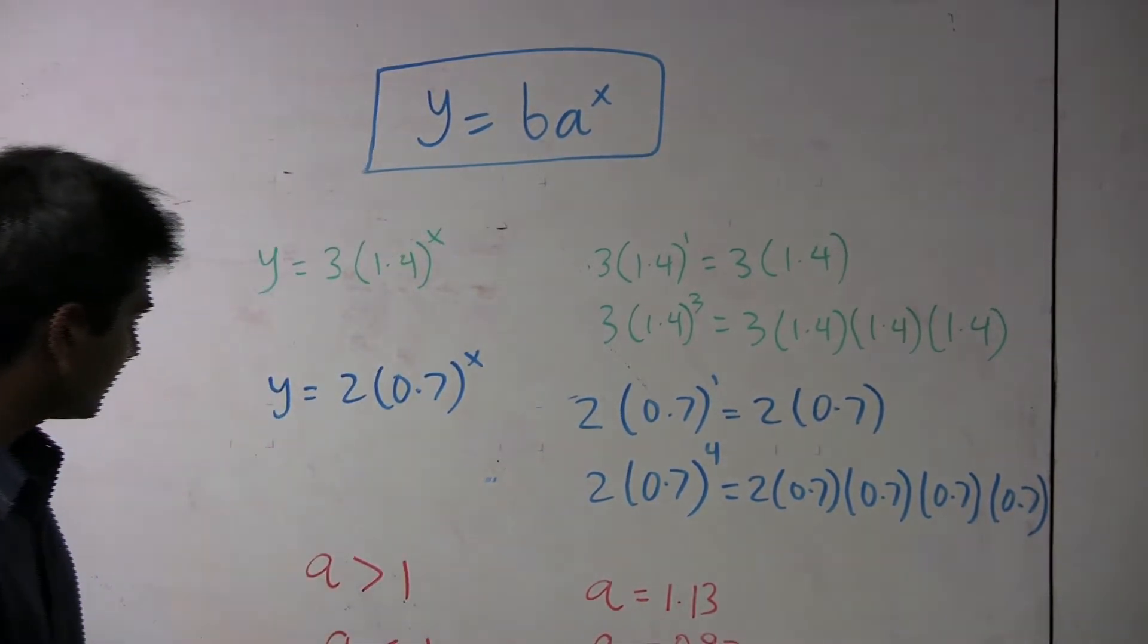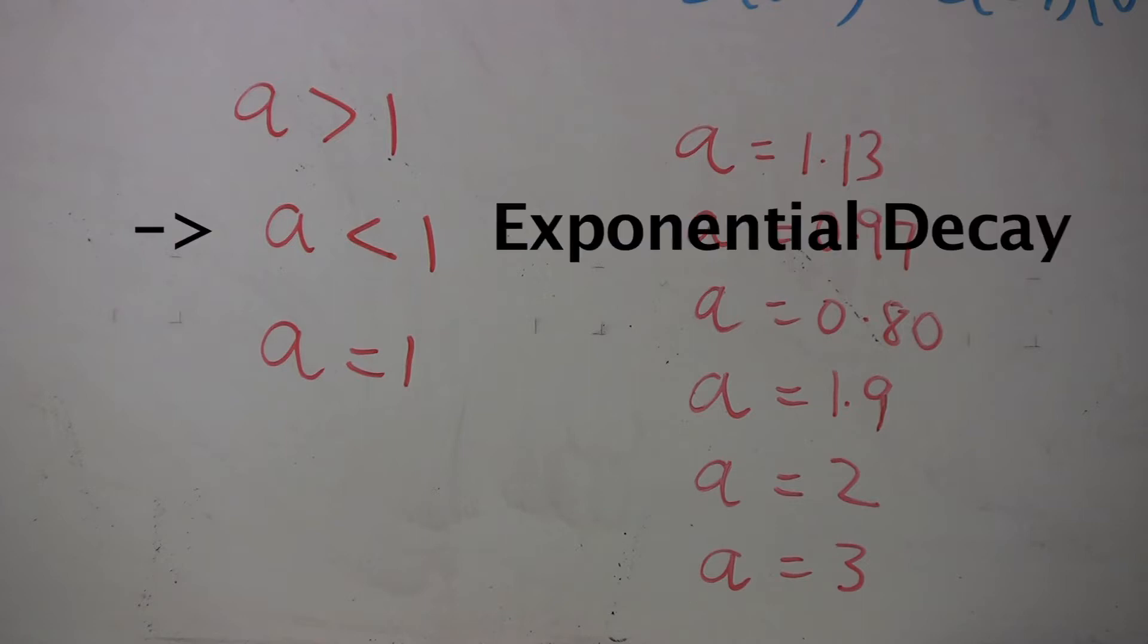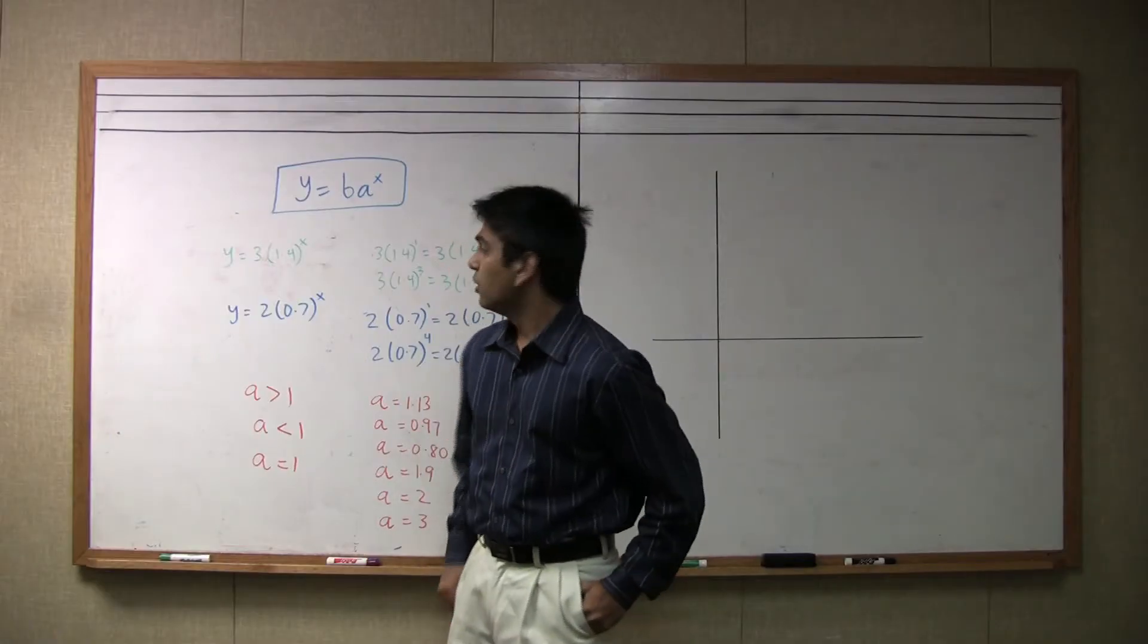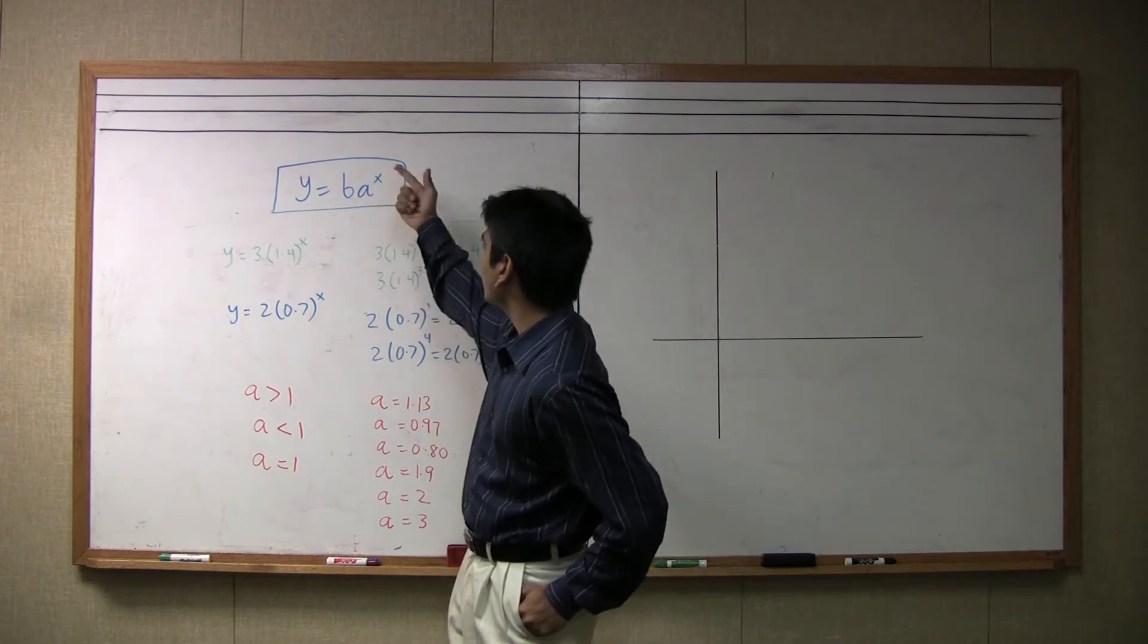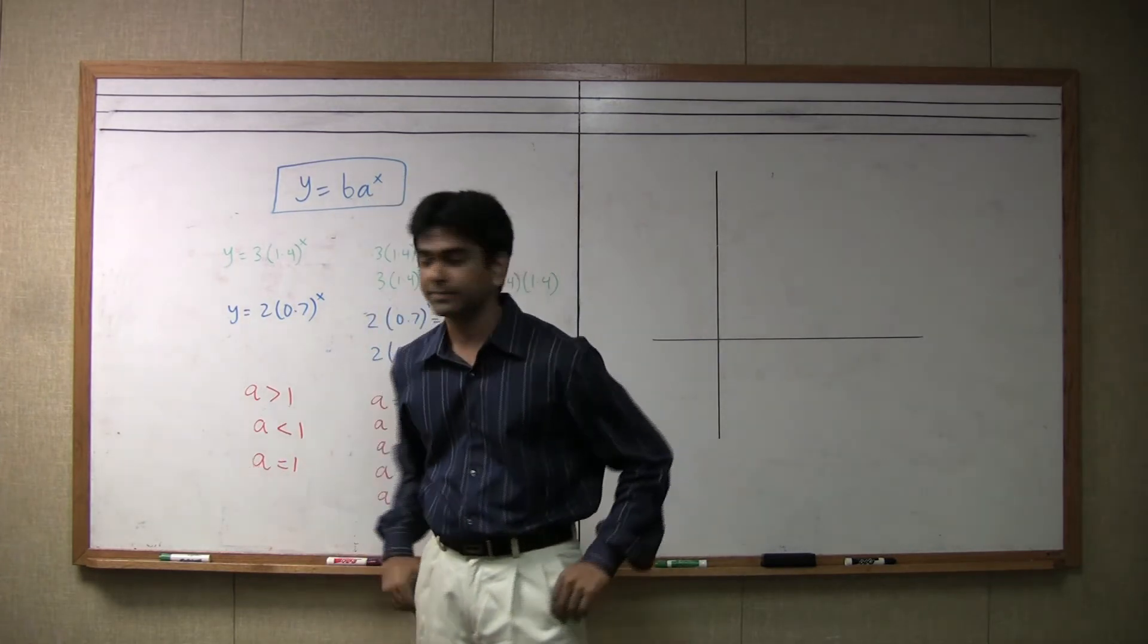So this brings us to the general rule. When a is greater than one, your function is exponential growth. When a is less than one, then your function is going to be an exponential decay function. What about when a is equal to one? Trick question? Not really. When a is equal to one, then regardless of what x is, y is just going to equal b, and that's just a horizontal line.